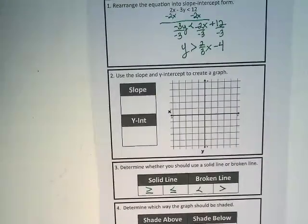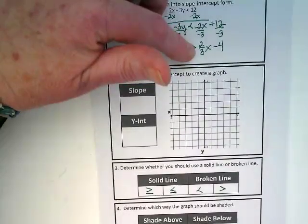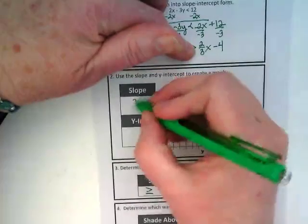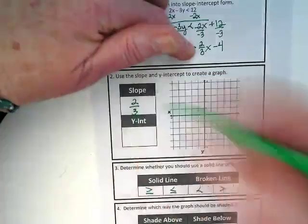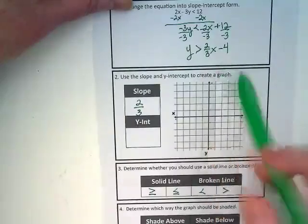First, you need to identify what is the slope. And we have what for our slope here? 2 over 3. So our rise is 2, our run is 3. And what is our y-intercept? Negative 4.